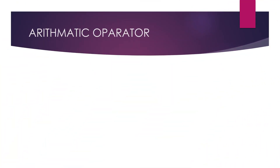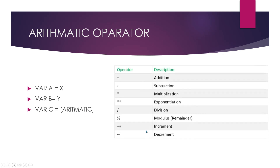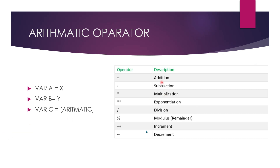In this JavaScript tutorial series you are going to learn arithmetic operators and how to use them. First of all you need to take a variable — x can hold a value, and secondly a variable y. We are going to use the arithmetic operator, and you can see an arithmetic operator chart here. We can see plus for addition and minus for subtraction.